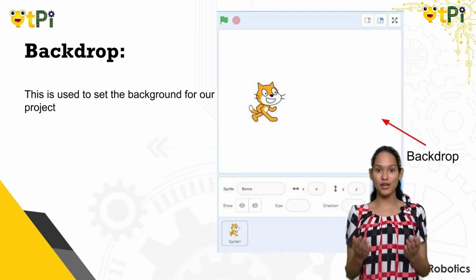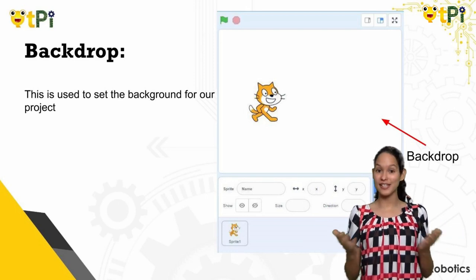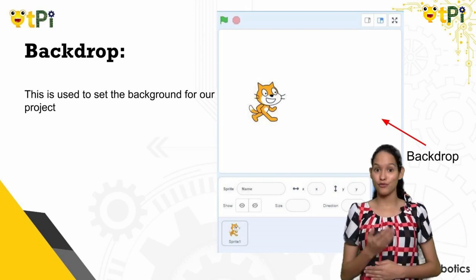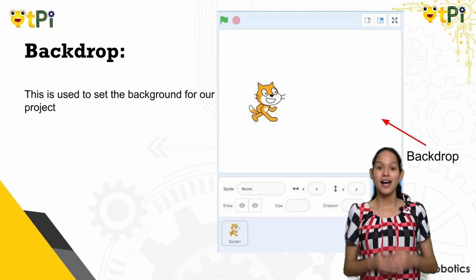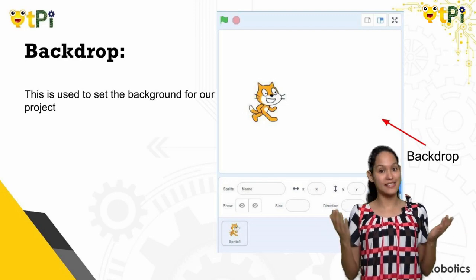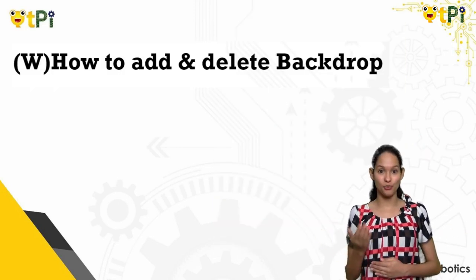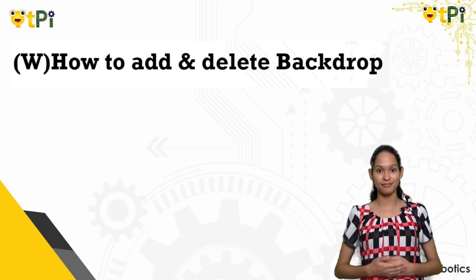To make our screen more lively, all we have to do is add a backdrop to it. If you are wondering what is a backdrop, a backdrop simply means background. Here's a short video clip on how to do it.